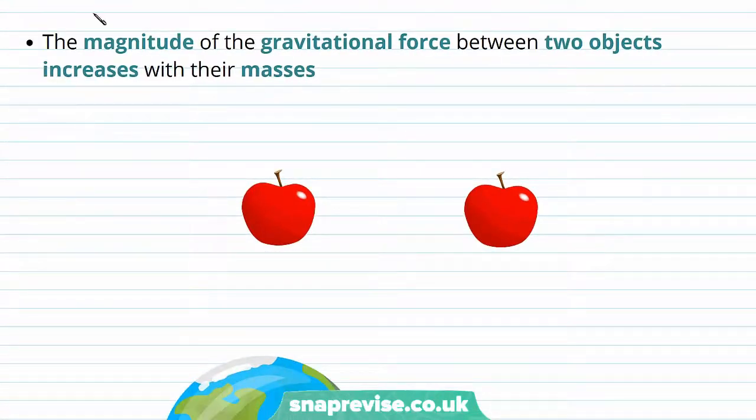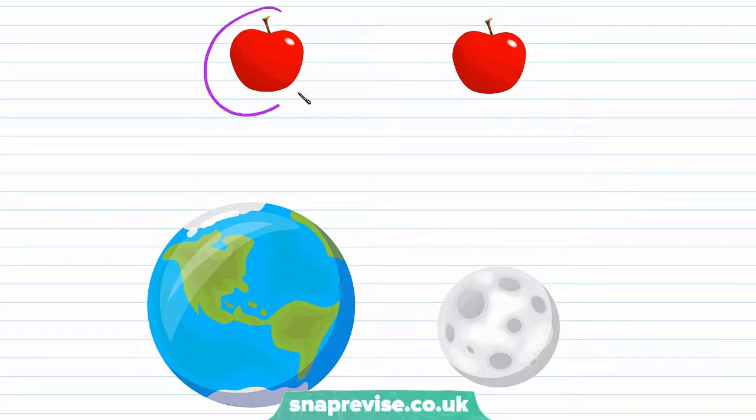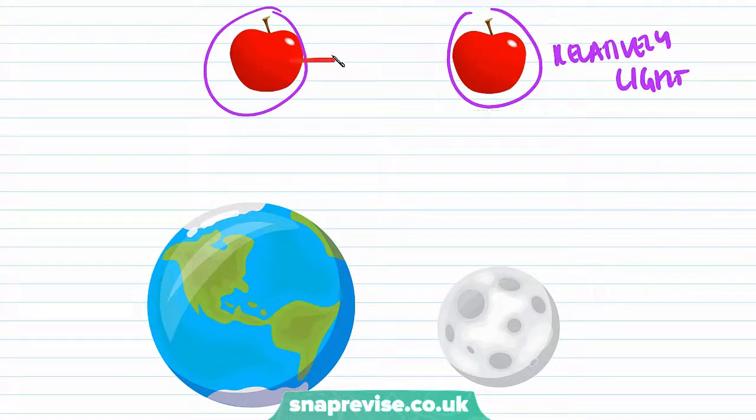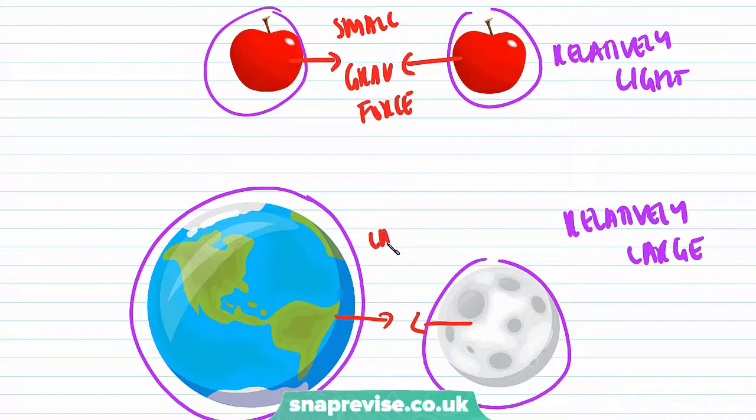The magnitude of the gravitational force between two objects increases with their masses. For example, two apples are relatively light, so they have a very small gravitational force between them. However, the Earth and the Moon are relatively large, and therefore there's a larger gravitational force between them. And in fact, it is this gravitational force that keeps the Moon rotating around the Earth.